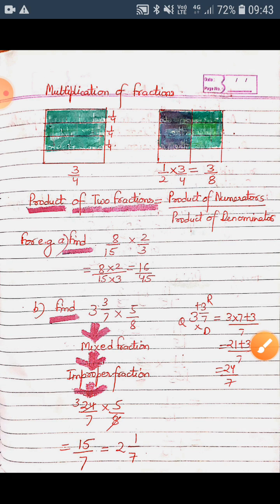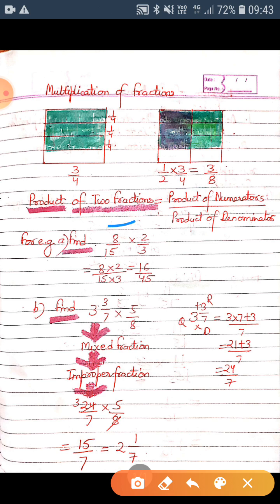The numerators are eight and two, so we multiply them together. Eight into two gives us sixteen, and then we multiply the denominators together. Fifteen into three gives us forty-five. So it is very simple to find out the product of the two fractions.